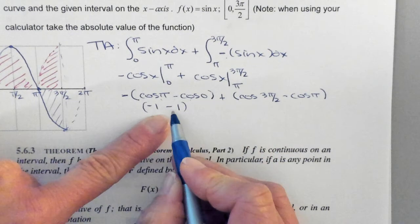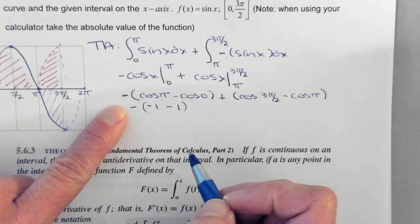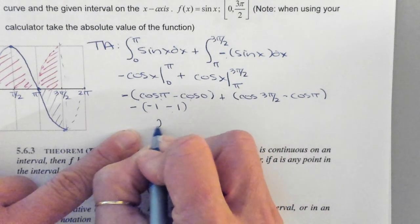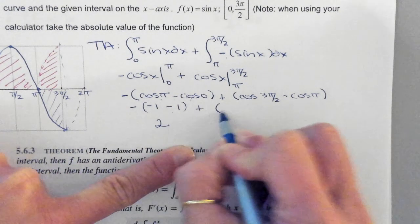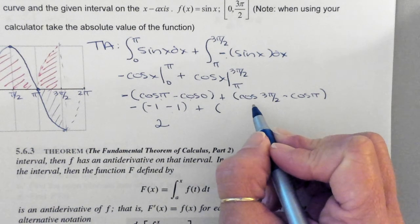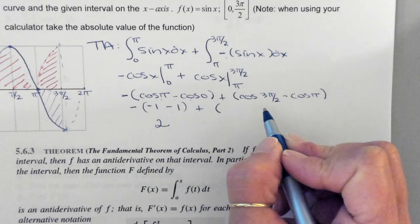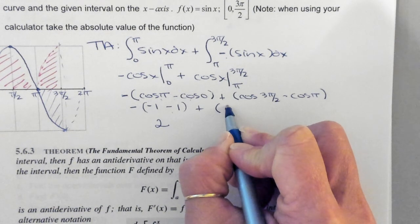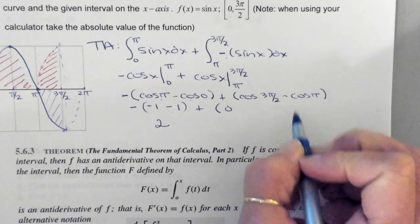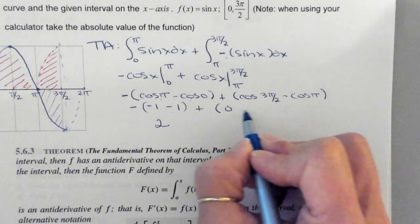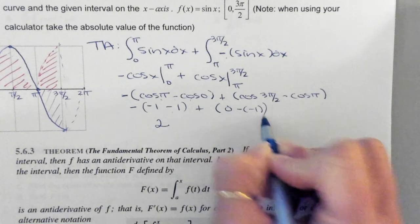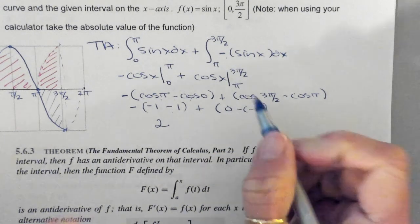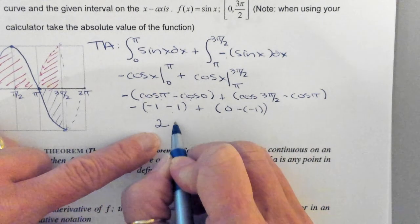But I'm, it's the opposite of this, right? So this is positive 2, plus, what's cosine of 3π over 2? 0, right? And then what's cosine of π? So it's minus a negative 1. So this is plus 1.